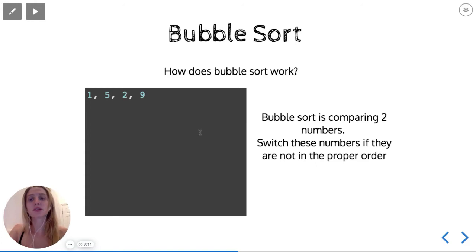Bubble Sort is going to skip 1 because it has nothing to compare 1 to and go immediately over to 5. And it's going to compare 5 with this left number 1 and say, okay, is 5 greater than or less than 1? 5 is greater than 1, so it's not going to switch those numbers.